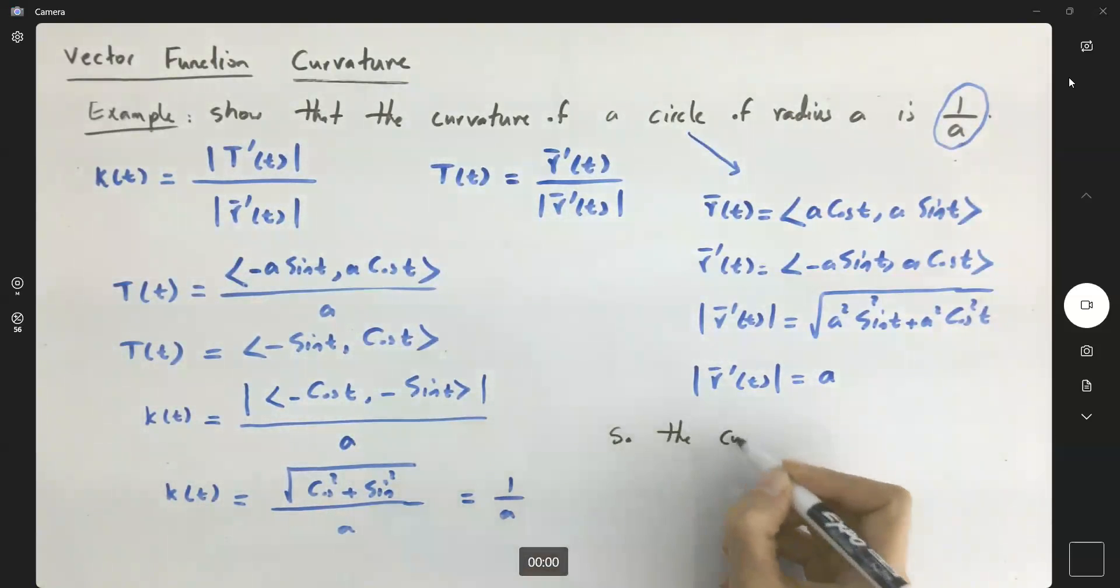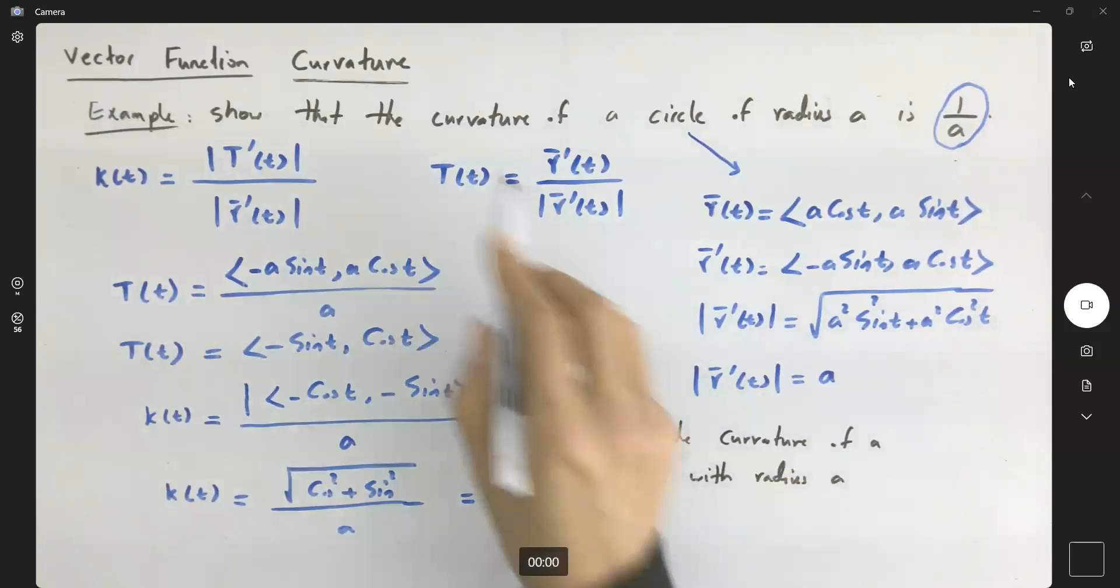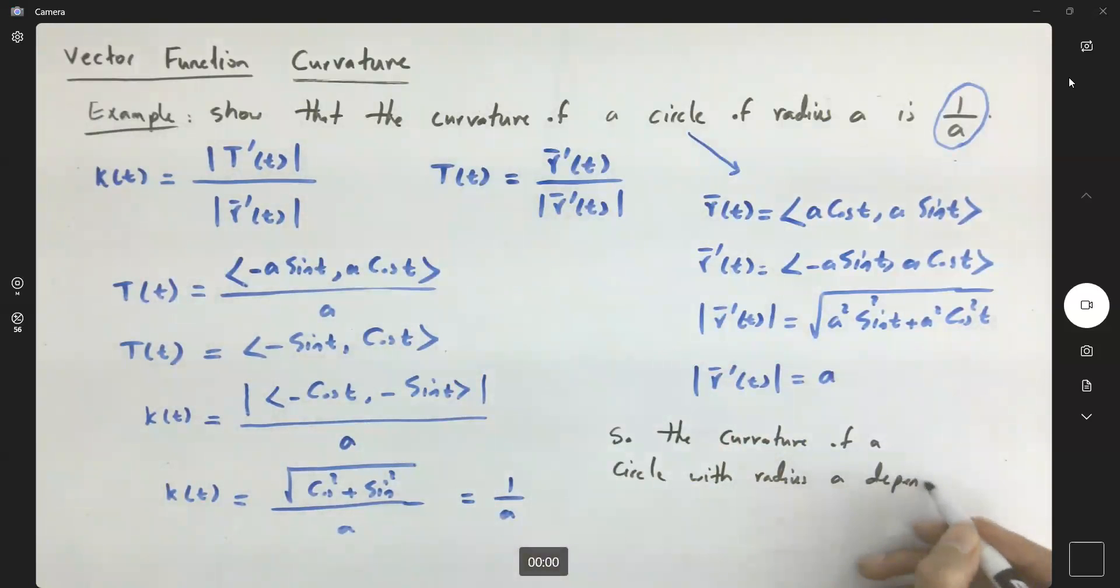So the curvature of a circle with radius A centered at the origin depends on 1 over its radius, which is 1 over A.